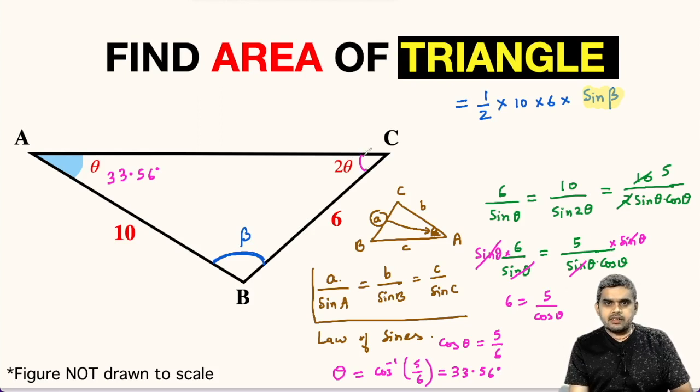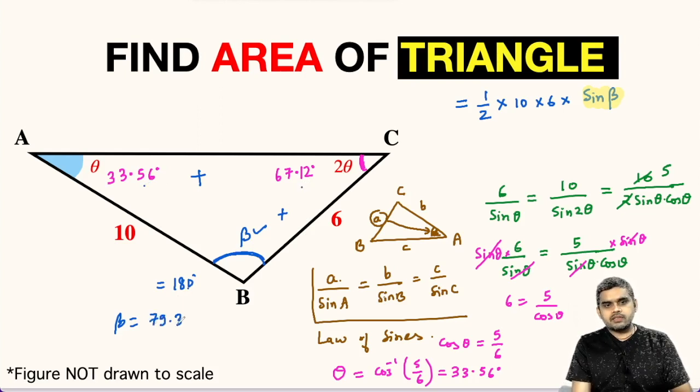So this angle, double of theta, will be twice 33.56, which is 67.12 degrees. Now using angle sum property of a triangle, we will calculate the value of this missing angle beta. So 33.56 plus 67.12 plus beta equals 180 degrees. So beta will be 180 minus 33.56 minus 67.12, which gives us beta equals 79.32 degrees.